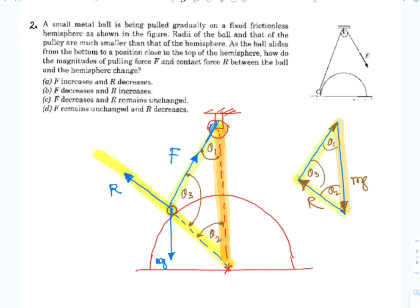So we see a real triangle and a vector triangle. I'll just name the points: this is B for the ball, C for the center of the hemisphere, and A for the center of the pulley.